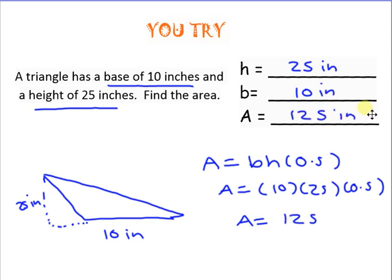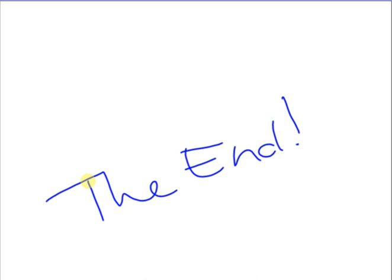The answer to this one is 5,000 meters. The answer to this one here is 125 inches squared. When you draw it, you should get a base of 10 and a height of 25, multiply those two by 0.5, and don't forget your inches squared. That is the end of this video and we will do more practice with this in class.